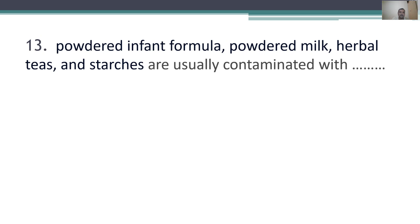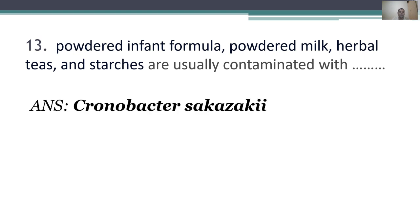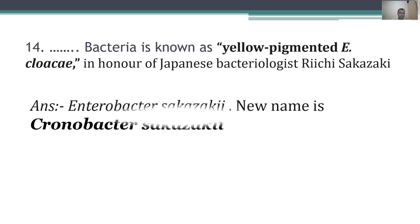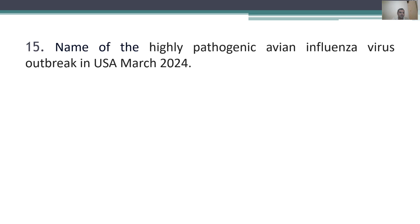Thirteenth question: powdered infant formula, powdered milk, herbal teas, and starters are usually contaminated with Chronobacter sakazakii. This bacterium is known as yellow-pigmented E. coli, named in honor of Japanese bacteriologist Riichi Sakazakii. The former name was Enterobacter sakazakii; the new name is Chronobacter sakazakii.